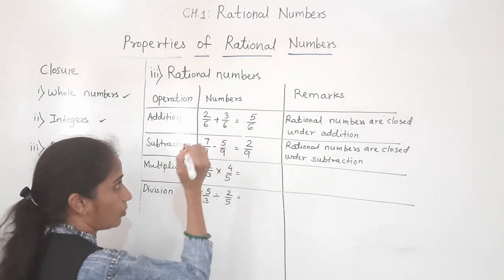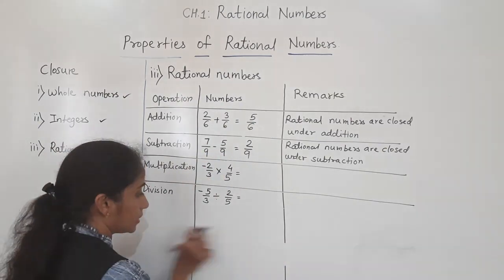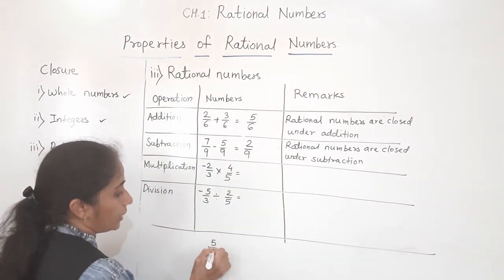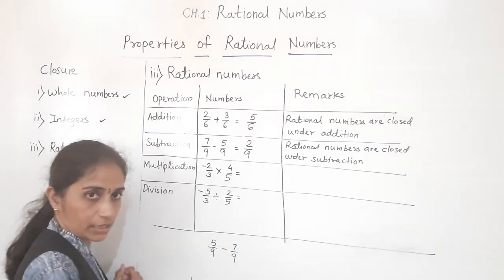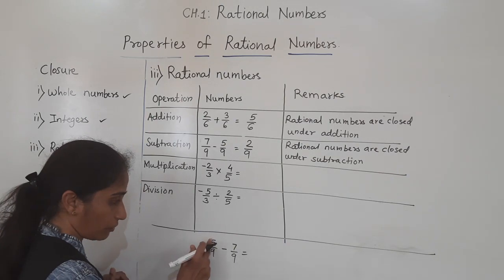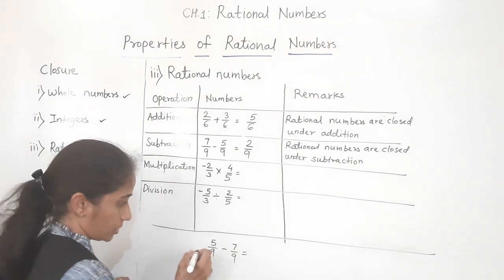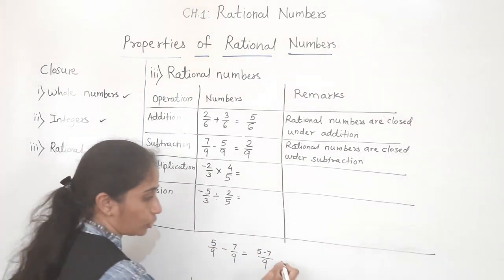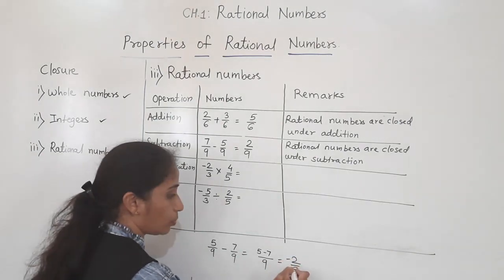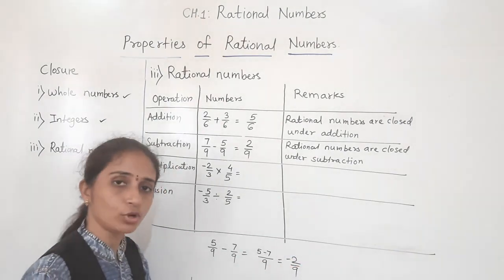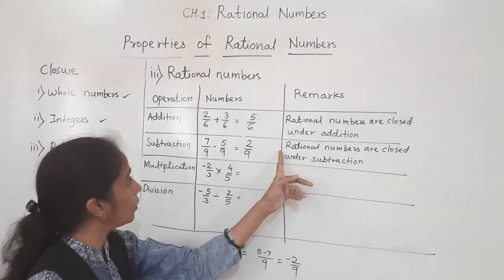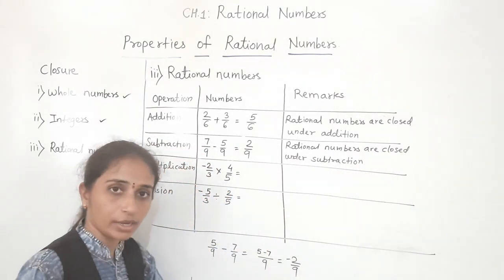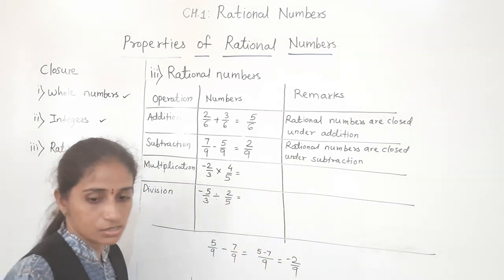Let's take another example: 5 upon 9 minus 7 upon 9. Denominators are same, so subtract: 5 minus 7 gives minus 2 upon 9. Is minus 2 upon 9 a rational number? Yes — so it works in subtraction also. Rational numbers are closed under subtraction.